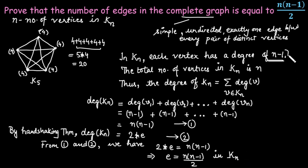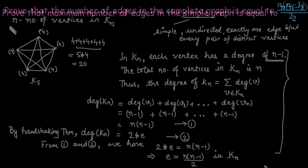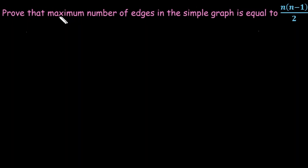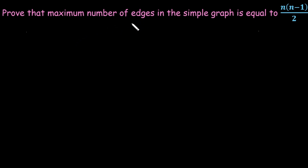And this is how we prove the statement. The next result to prove is that the maximum number of edges in any simple graph is n(n-1)/2, where n represents the number of vertices. Whenever we need to find the number of edges, we use the handshaking theorem, since the total degree of the graph equals twice the number of edges.